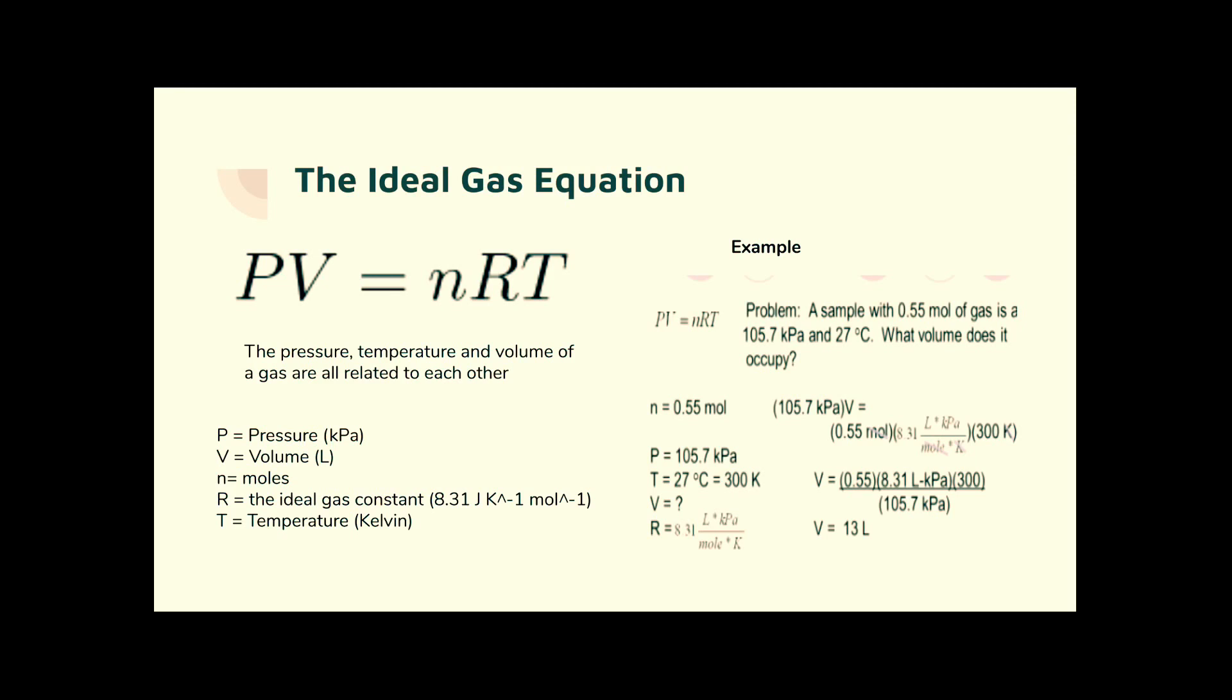Here's a good example. A sample with 0.55 moles of gas. Sometimes they might just give you grams. You have to change to moles. Number of moles is mass over molecular mass. Pressure of 105.7 kilopascals. Remember, kilopascals is going to give me an answer in decimeters cubed, just the same as liters. And 27 degrees C. And the other thing, the other point I've been making is that you need to convert your degrees C to Kelvin. So, we need to add 273. So, PV equals nRT. So, V is going to be nRT over P.